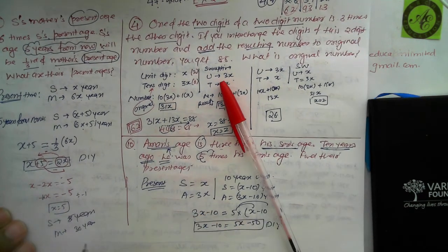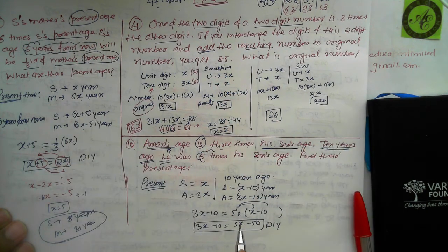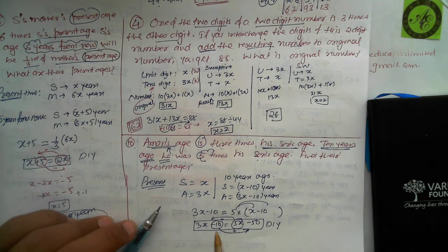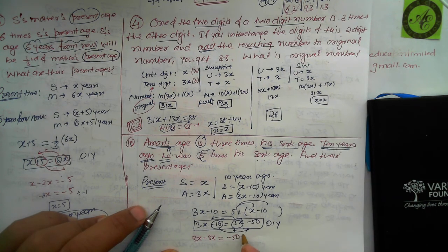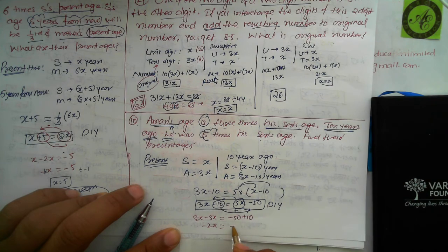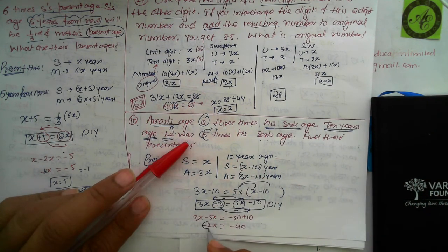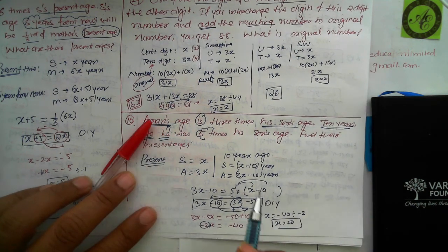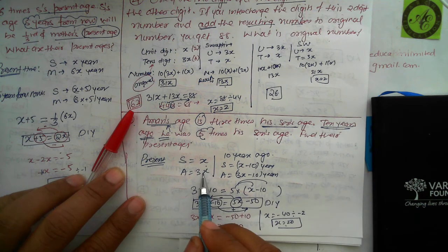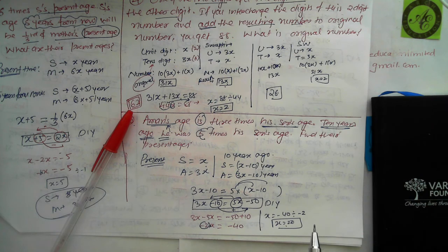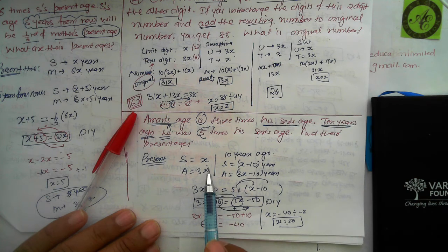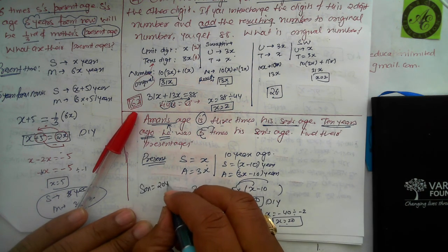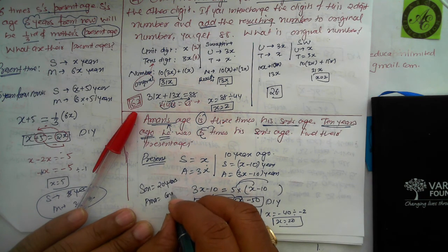Solving Aman's equation: 3x − 10 = 5x − 50. Bringing x terms to one side and numbers to the other: 3x − 5x = −50 + 10, giving −2x = −40, so x = 20. Son's present age is 20 years and Aman's present age is 60 years. Verification: 10 years ago son was 10 and Aman was 50, and 50 = 5 × 10 ✓